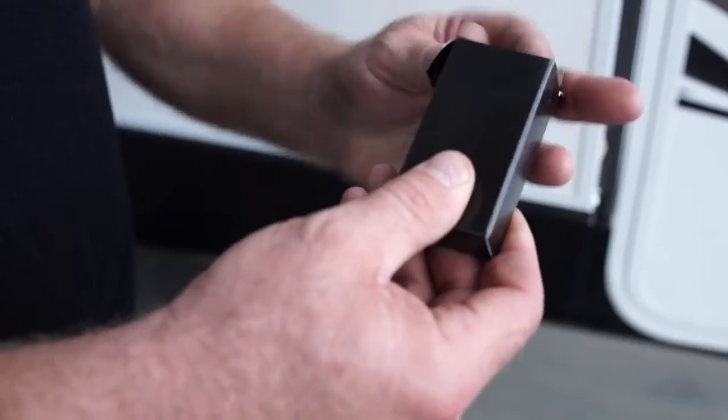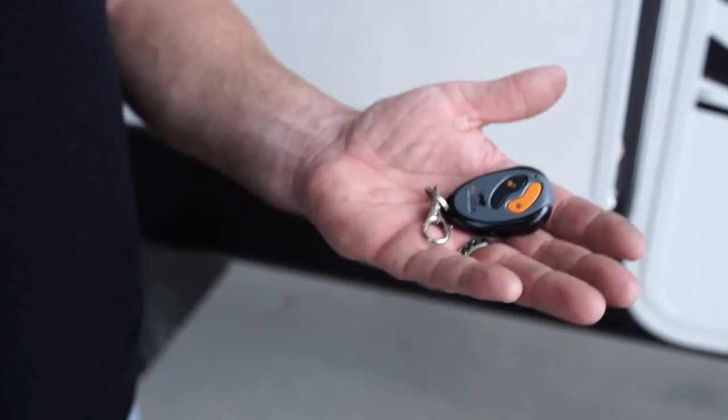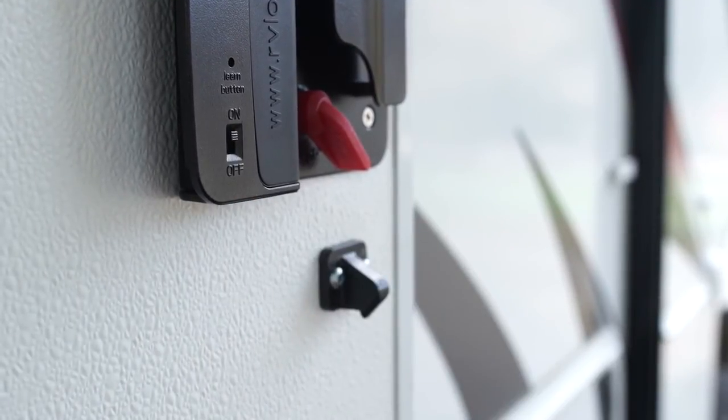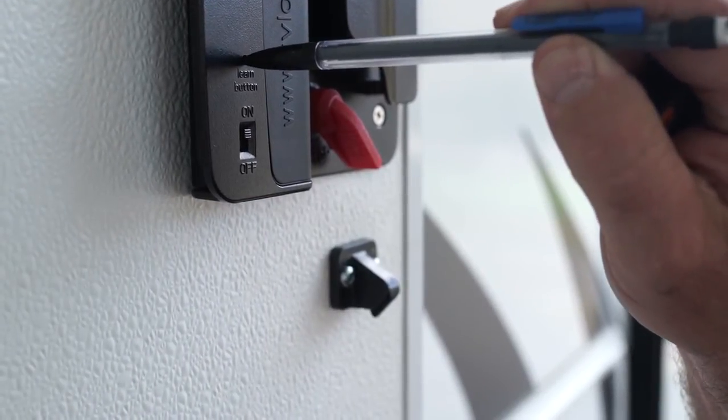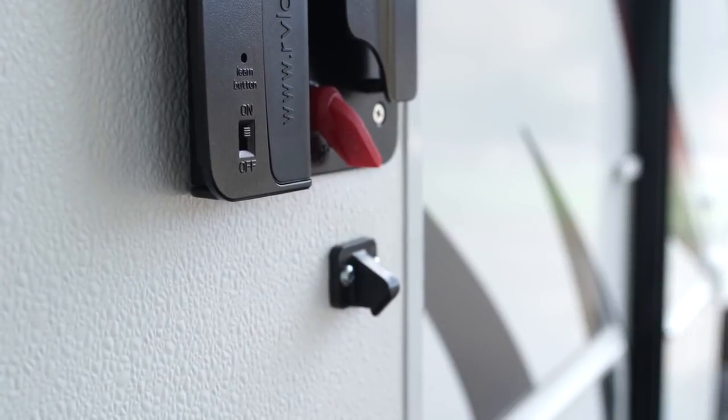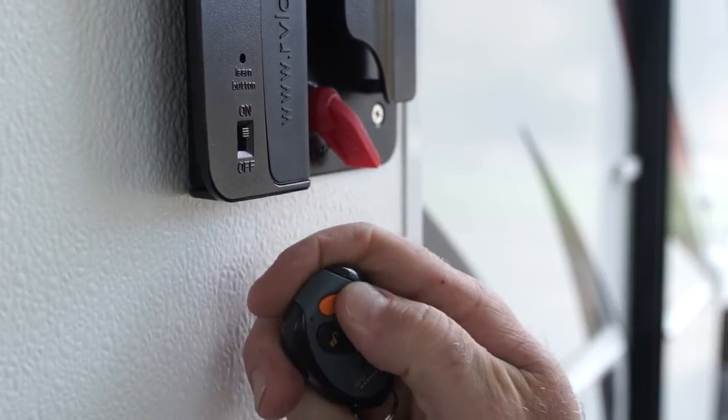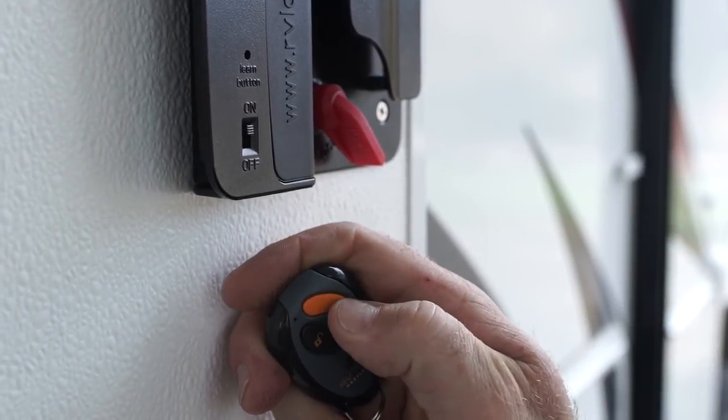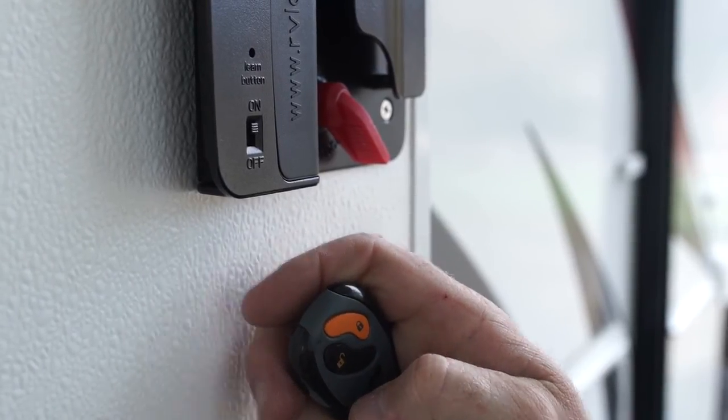To sync the RVLock handle with your keypad and remotes, lightly press the learning button through the pinhole located next to the on-off switch. A beep will confirm that you have entered the programming mode. Now repeat pressing the lock button on your remote until the handle confirms with a series of rapid beeps.